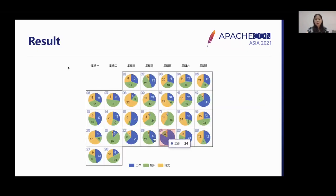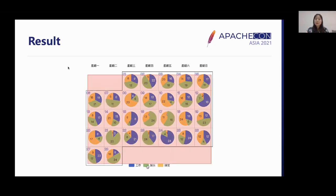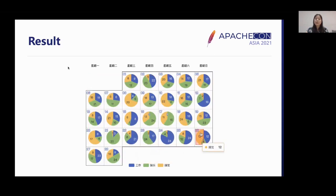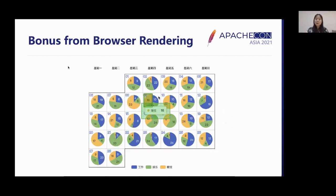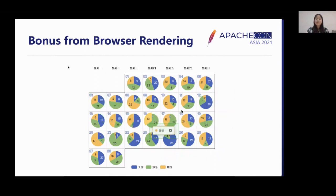This is the result of dirty rectangle rendering with Apache eCharts, where the red rectangles are the repaint areas in each frame. We can see that only a small part of the chart has been repainted in most cases. In addition, some browsers like Chrome refresh only at the modified areas, giving us extra performance bonus at the rendering level. The green part of the figure shows the refresh positions at the browser level.